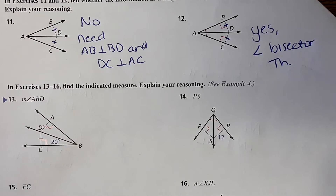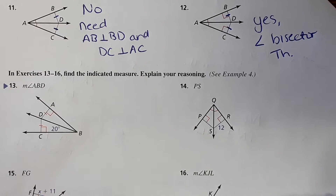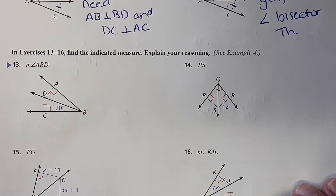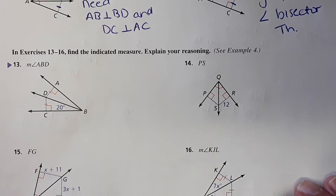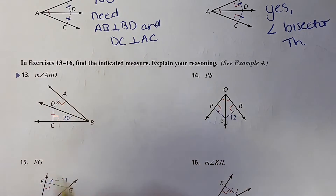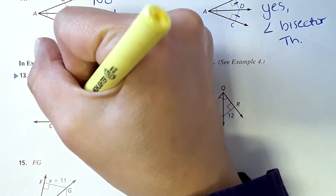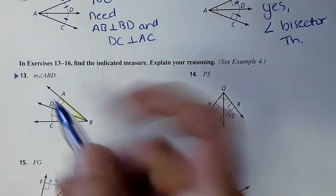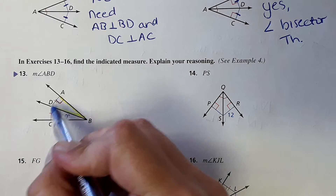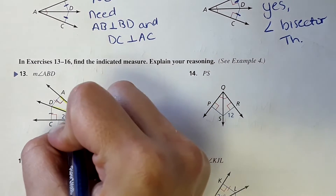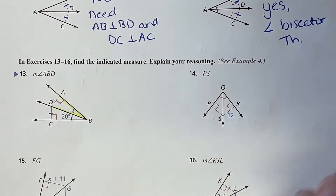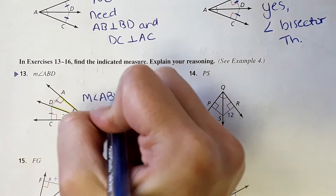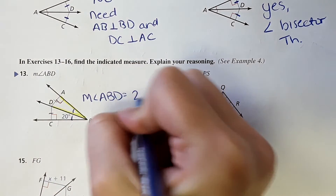Back to math! Number 13 wants to know the measure of angle ABD. This angle right here shows this perpendicular, and these two are the same. So then we can say that these two angles are the same measure. So the measure of angle ABD equals 20 degrees.